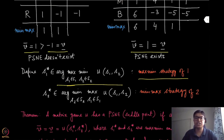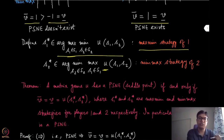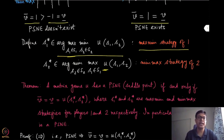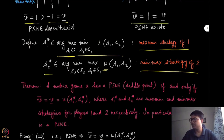The maxmin strategy is in some sense the safest or worst-case optimal strategy for player 1. Similarly, because we are using the same utility function where player 2's utility is the negative of player 1's, the analogous notion of maxmin for player 2 will be minmax. The minmax strategy of player 2 is denoted S2 star.